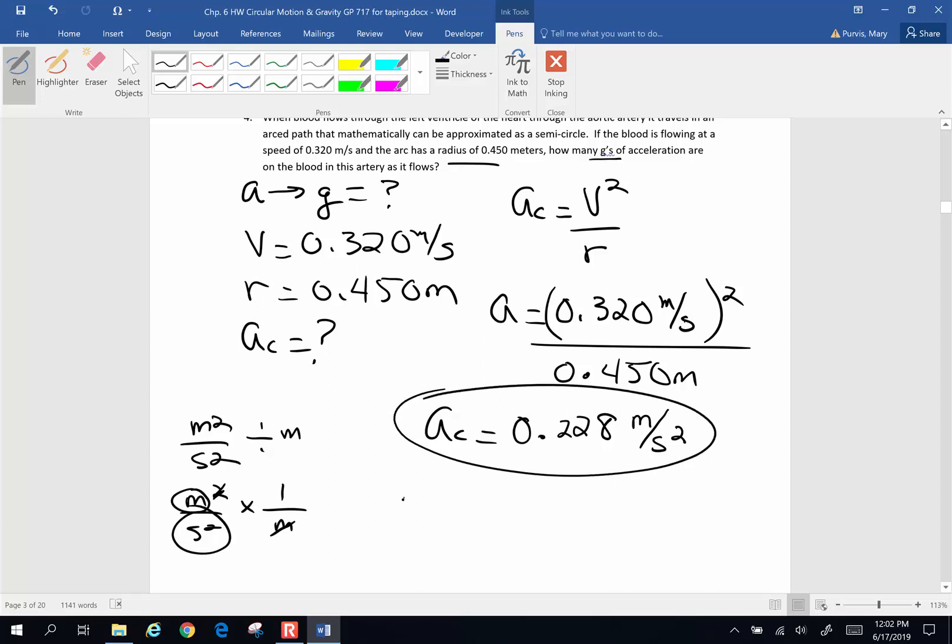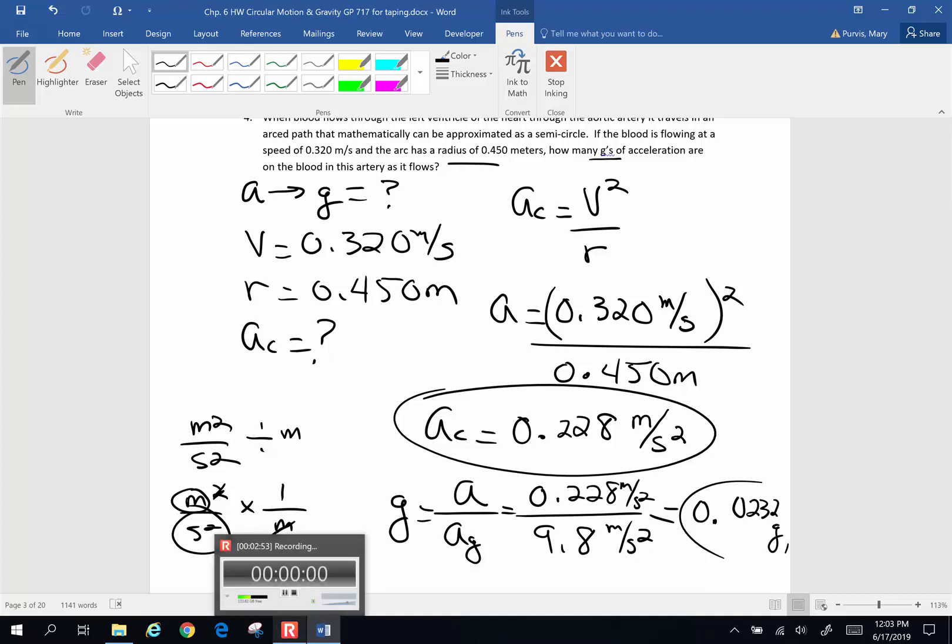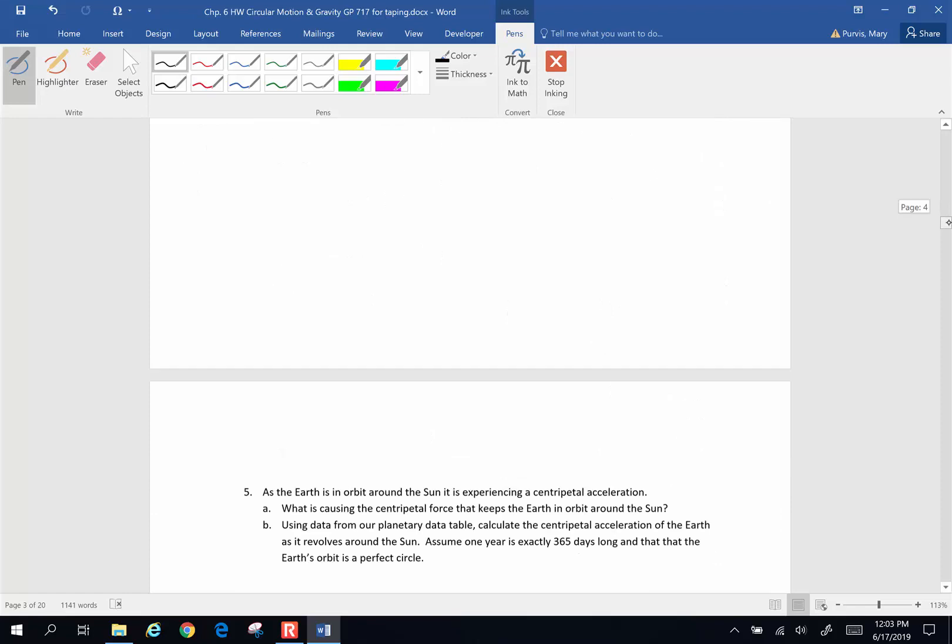And that's what I end up with. To calculate g's, you take your acceleration divided by the acceleration of gravity, 0.228 meters per second squared, divided by 9.8 meters per second squared. And when I do that, I'm going to end up with 0.0232 g's. G's is a number that does not have a unit because it is a ratio compared to the acceleration of gravity. And the answer is, not a lot of g's is the truth. All right, that will do for this one. Let's go see about another problem.